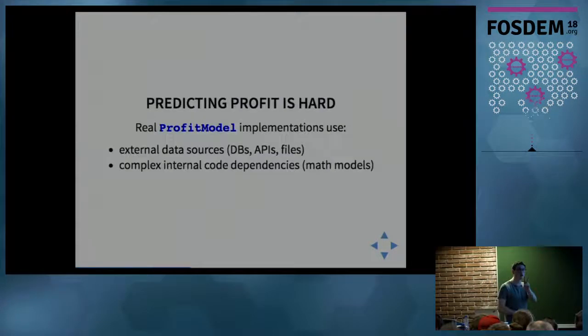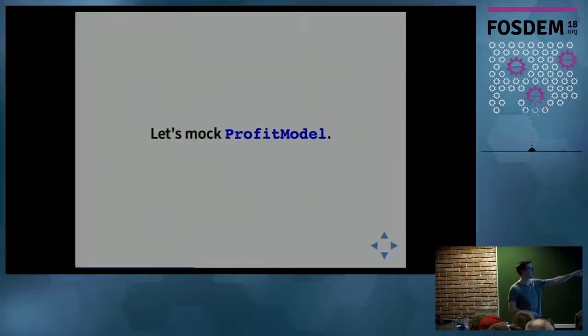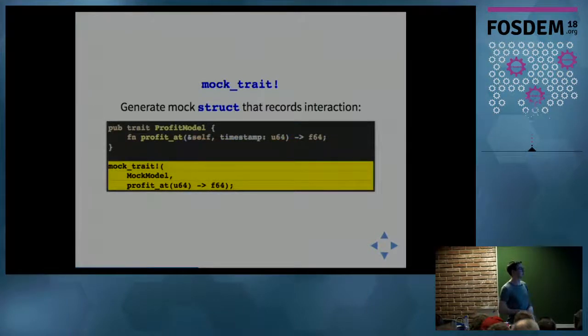In Rust, we do this with two macros. First is mock trait. Mock trait generates a struct that has a bunch of boilerplate and bookkeeping inside it to keep track of how it's been called. In this case, we call mock trait. This is the name of our mock struct, and then we list the methods in the trait that we're mocking, so it generates the right boilerplate code internally.